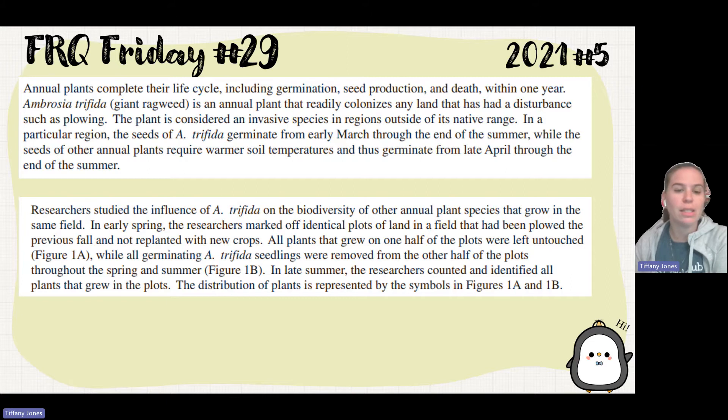Researchers studied the influence of A. trifida on the biodiversity of other annual plant species that grow in the same field. In early spring, researchers marked off identical plots of land in the field that had been plowed in the previous fall and had not been replanted with new crops. All plants that grew on one half of the plots were left untouched, while all germinating A. trifida seedlings were removed from the other half of the plots throughout spring and summer. In late summer, the researchers counted and identified all plants that grew in the plots.